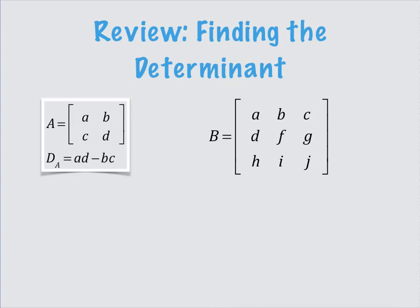So, review: finding the determinant. This is something we already talked about. With a 2 by 2 matrix you take your main diagonal, multiply that, and subtract the secondary diagonal — that gives us our determinant. When we get bigger matrices we still look at our main diagonals and our secondary or minor diagonals.